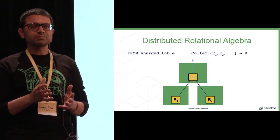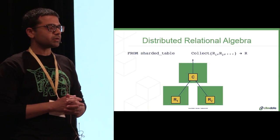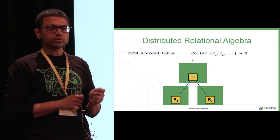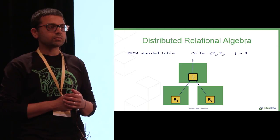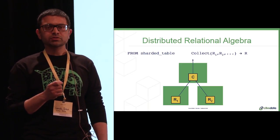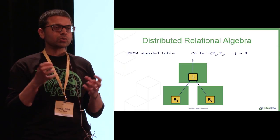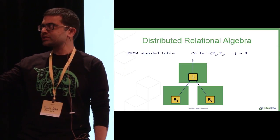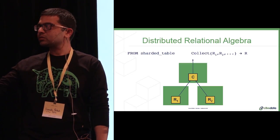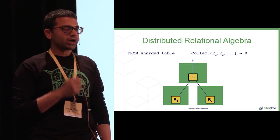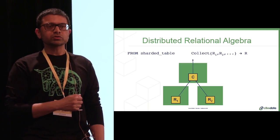So how do these actually map to distributed data? So the main fundamental relational algebra operator we need to introduce is the collect operator, or also known as the gather operator. Essentially, what it does is reconstitute all the shards into a non-distributed form. So in this case, collect basically collects all the shards, R1, R2, and so on. And we get back our original non-distributed relation.